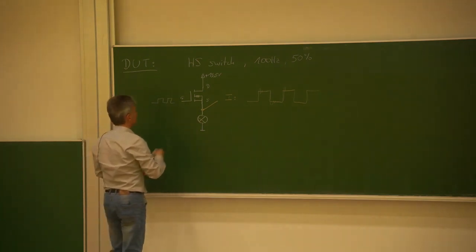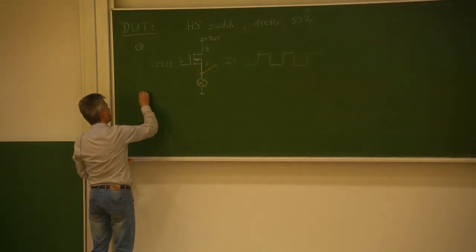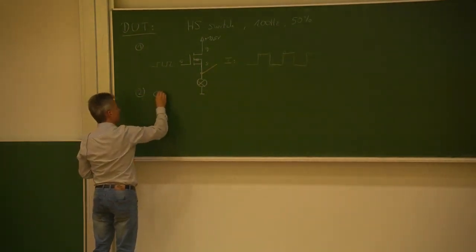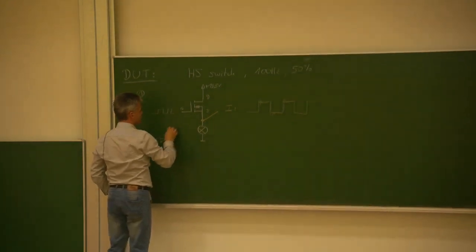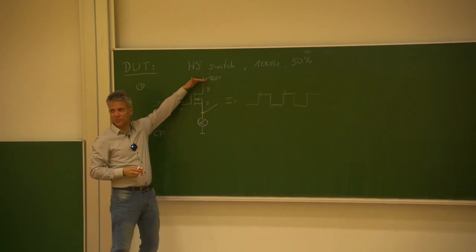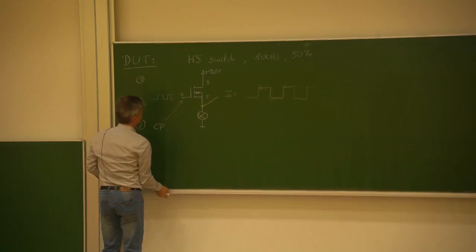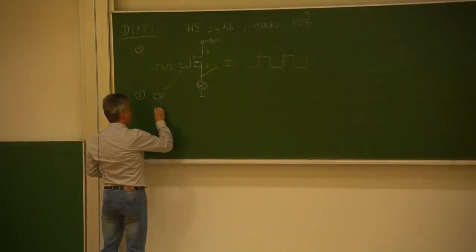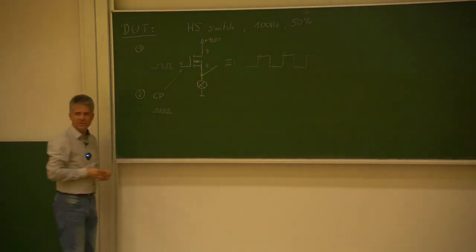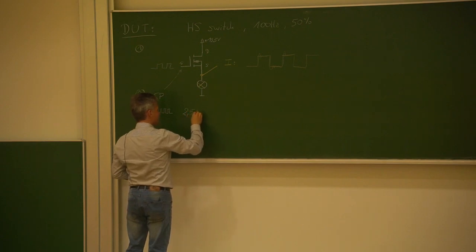And as we said, there is a second source which is related to the charge pump. The charge pump here somehow drives the gate to a potential that is higher than 13.5V — this is what we discussed last time in order to turn this switch on. The charge pump is also operated by a periodic clock signal, in this case let's make it 2.5 MHz.